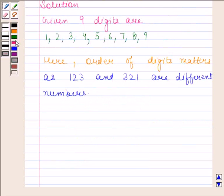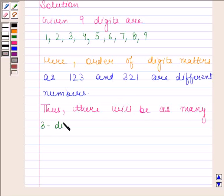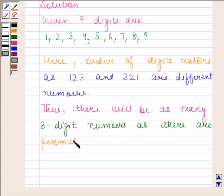Thus, there will be as many three-digit numbers as there are permutations of 9 different digits taken three at a time.